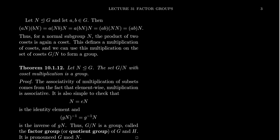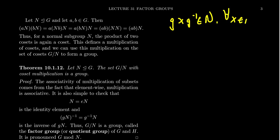With that lemma out of the way, let's now define the idea of coset multiplication. Suppose we have a normal subgroup N. What do we know about normal subgroups? Normal subgroups are those subgroups closed under conjugation: gxg⁻¹ belongs to N for all x inside N and for all g inside G. That's equivalent to being a normal subgroup. This condition tells you that gNg⁻¹ is equal to N — it's closed under conjugation.